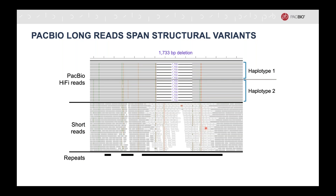For example, here we have short reads at the bottom, and we see that they don't really map well to this repeat region, so we missed this 1.7 KB deletion that we can see perfectly in the PacBio HiFi reads above. We actually even see two different haplotypes. This is a homozygous deletion, and we have a SNP that separates this into two haplotypes, so you can see both haplotypes clearly.